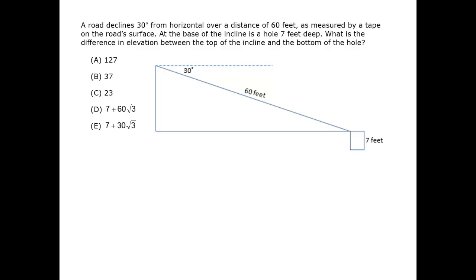We have the length of the side 60 feet corresponding to the right angle, the hypotenuse. And we want to find the shortest side, the one measuring the vertical drop, which corresponds to the smallest angle, 30 degrees.